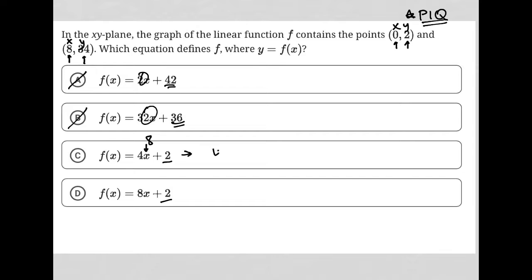this equation will become 4 times 8 plus 2. 4 times 8 is 32 plus 2 is actually 34. So that's exactly what I wanted. I wanted to be able to plug in 8 for x and get 34 for f(x). And therefore, choice C must be the correct answer.